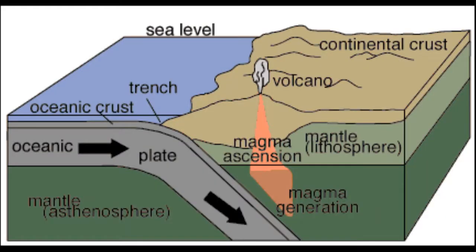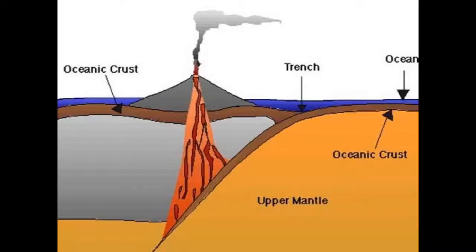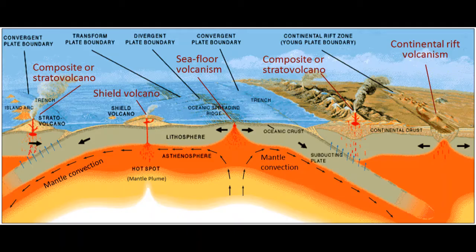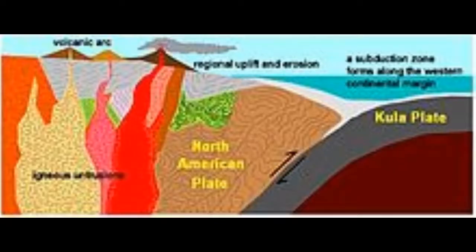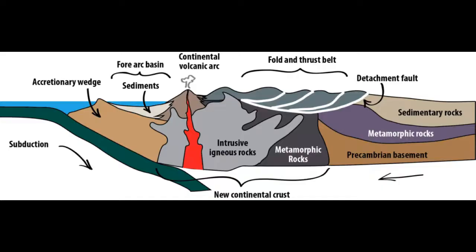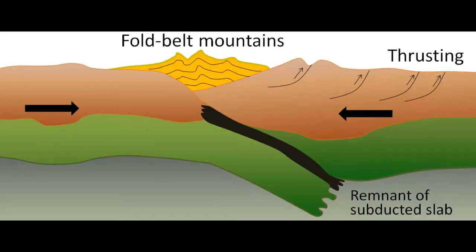Volcanic mountains: movements of tectonic plates create volcanoes along the plate boundaries, which erupt and form mountains. A volcanic arc system is a series of volcanoes that form near a subduction zone, where the crust of a sinking ocean plate melts and drags water down with the subducting crust.